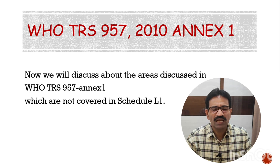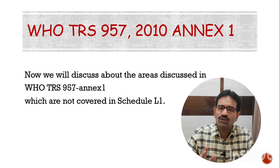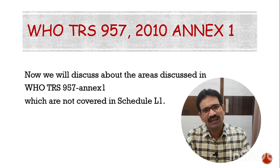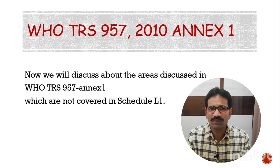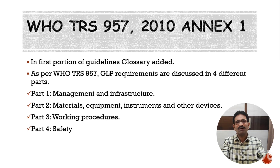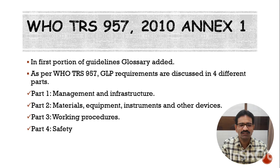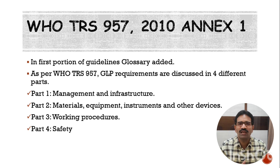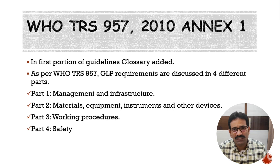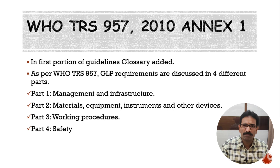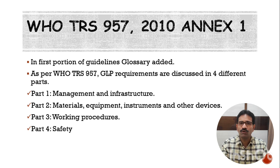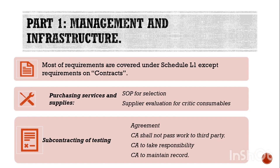Now let us discuss WHO TRS 957-2010, Annex 1. WHO TRS 957 covers things that Schedule L1 has not sufficiently covered. WHO TRS 957 is organized in four parts: Part 1 — management and infrastructure; Part 2 — materials, equipment, instruments and other devices; Part 3 — working procedures; and Part 4 — safety, which is more elaborated in WHO TRS 957.